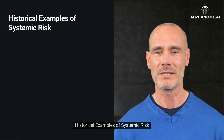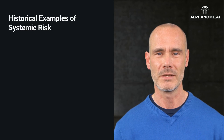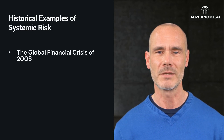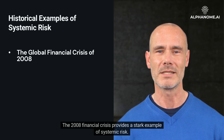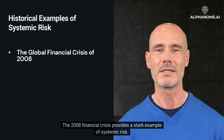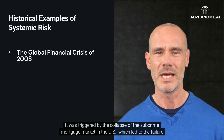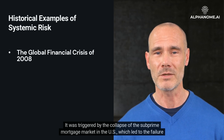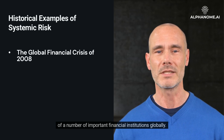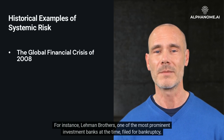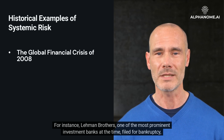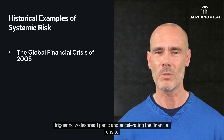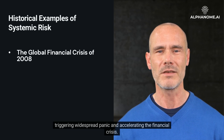The Global Financial Crisis of 2008 provides a stark example of systemic risk. It was triggered by the collapse of the subprime mortgage market in the US, which led to the failure of a number of important financial institutions globally. For instance, Lehman Brothers, one of the most prominent investment banks at the time, filed for bankruptcy, triggering widespread panic and accelerating the financial crisis.